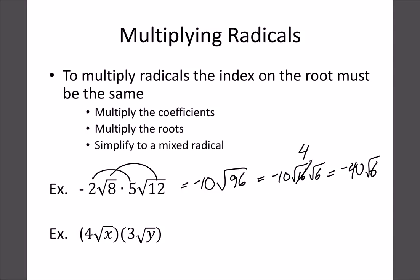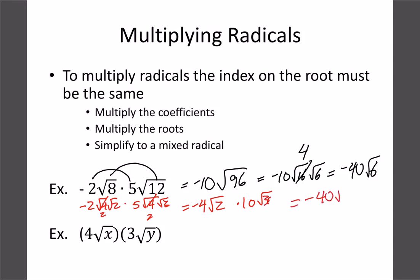You can multiply first and then simplify, or simplify first — both work. Going back to the original: root 8 becomes 4 and 2, giving negative 4 root 2, and root 12 becomes 4 and 3, giving 10 root 3. Multiplying those gives negative 40 root 6 — the same answer either way. Generally, if numbers are small, multiply first then simplify; if the numbers are large and would give big root numbers, simplify first.